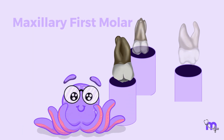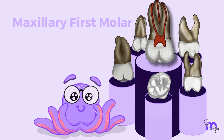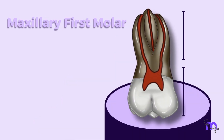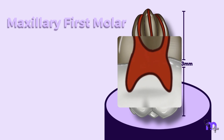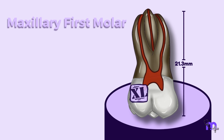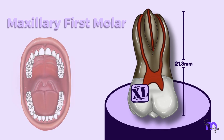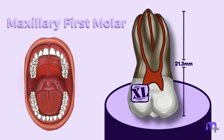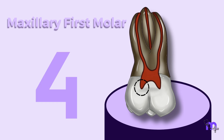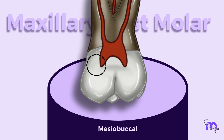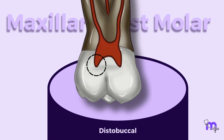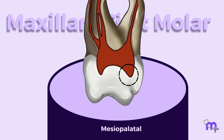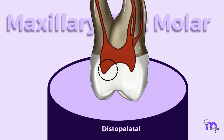Let's discuss the anatomy of the tooth. With an average length of 21.3 mm, the pulp chamber of the maxillary first molar is the largest among all the teeth in the arch. It has four pulp horns: mesiobuccal, distobuccal, mesiopalatal, and distopalatal.